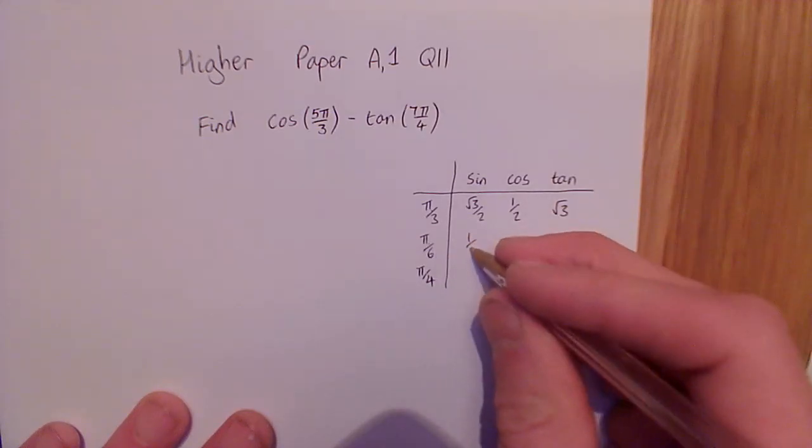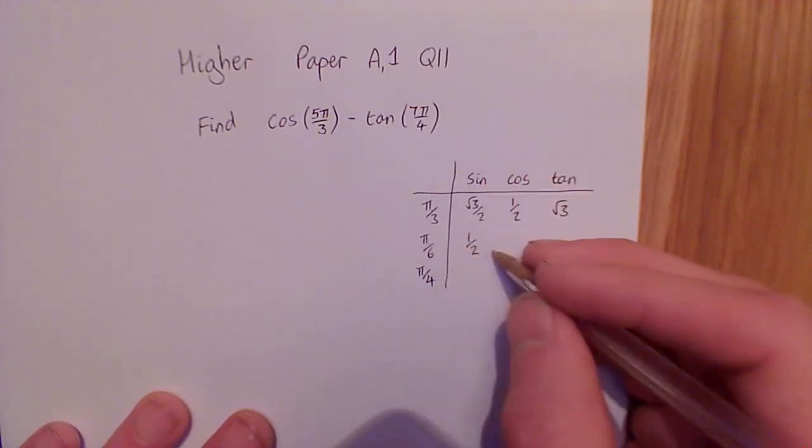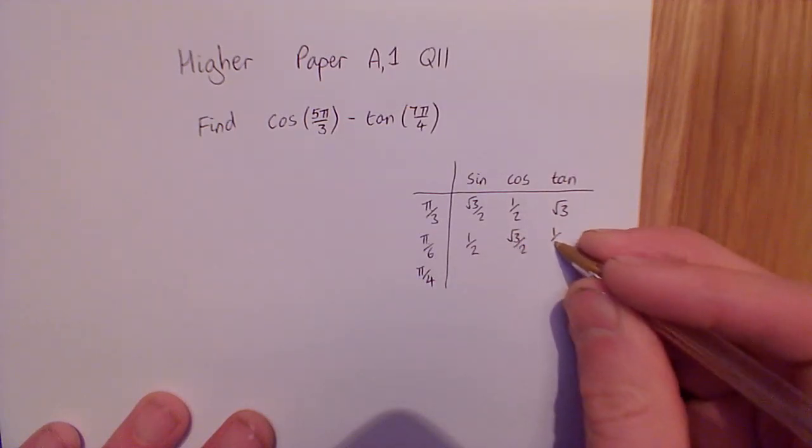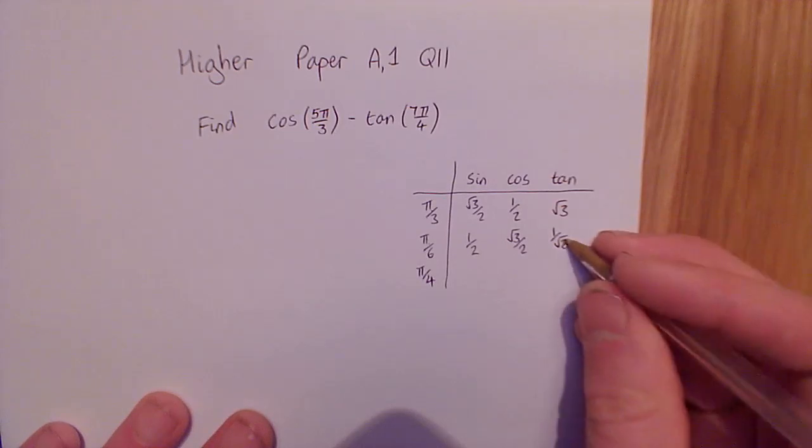So if you haven't got this table, this might be useful. Sine of π/6 is a half, cos of π/6 is √3/2, and tan of π/6 is 1/√3.